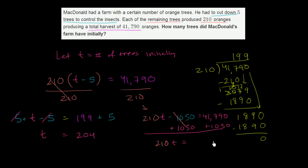While the right-hand side, you're going to be left with, let's see, 0 plus 0 is 0, 9 plus 5 is 14, 1 plus 7 is 8. So 42,840. And now you can divide both sides by 210.